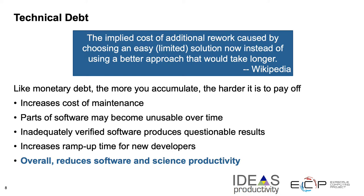This may cause increases in the cost of maintenance. Sometimes parts of the software become unusable. And the software produces questionable results because it may not have been adequately verified. There may be things like insufficient documentation causing extra time and effort when onboarding new developers. So the aim is to use processes that reduce technical debt, resulting in an increase of software productivity with the desired result of increasing science productivity.